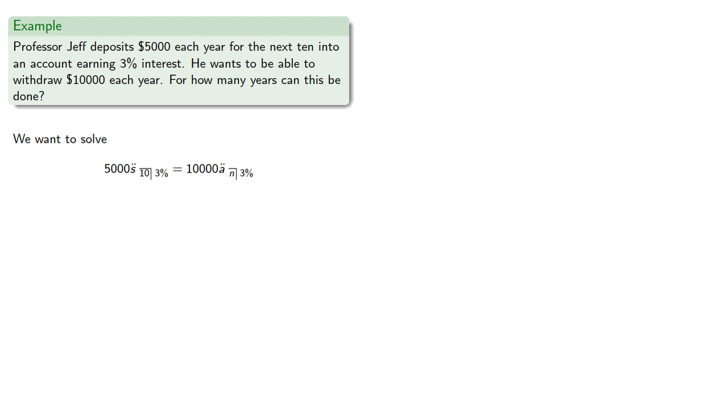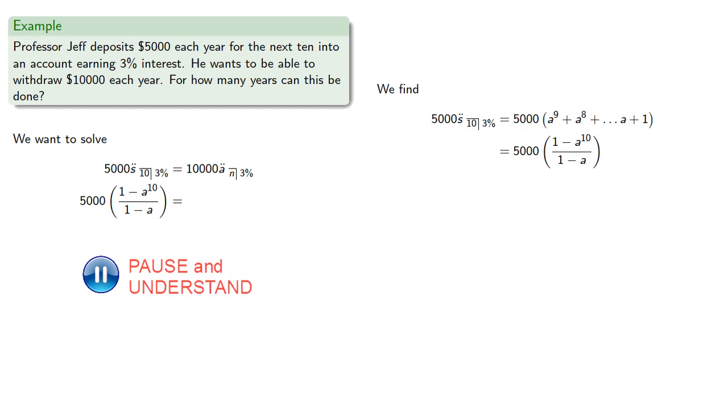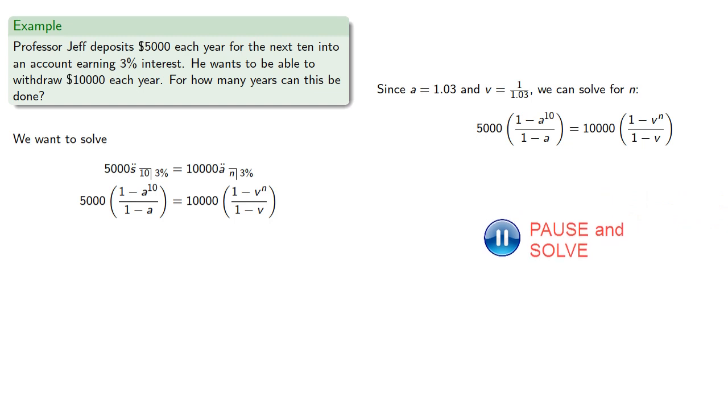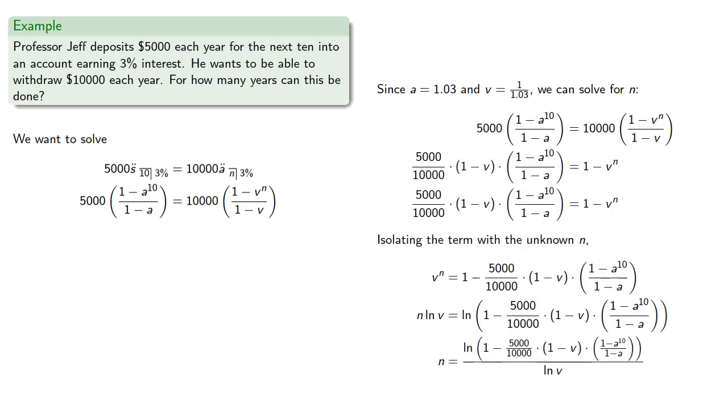Now the left hand side has nothing we don't know so we can express it exactly. The right hand side is a geometric series where we don't actually know what that last term is, but we can still apply the geometric series summation formula. Now at an interest rate of 3% we know that a is 1.03 and v is the reciprocal. So we can solve for n. Let's isolate that n term. And we can calculate this to be about 6.18.